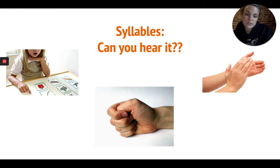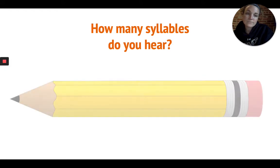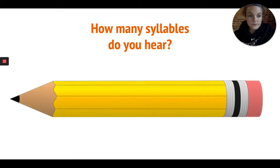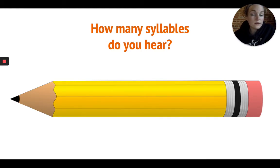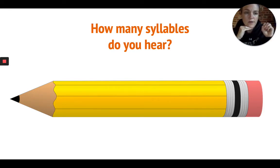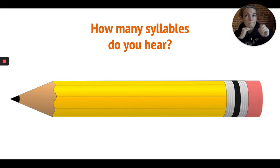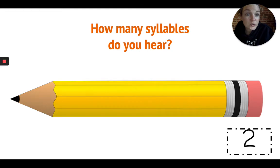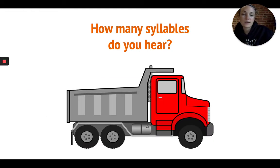Let's take a look at some pictures. I'll do the first one as an example. How many syllables do you hear when you say this word? What is this a picture of? Pencil. I'm going to use my chin to start. Pencil. Let me try and count with my other hand. Pencil. How many syllables did you hear? Pencil. Two. I heard two syllables in the word pencil.